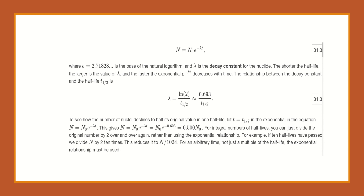In this class, in physics classes in general, what we tend to worry about is the math. We're going to do a quick run-through of how to do the math regarding radiocarbon dating. The following equation gives a quantitative relationship between the original number of nuclei present at time 0, N₀, and the number N at a later time. The equation is N equals N₀ times e to the negative lambda t, where e is its mathematical equivalent of 2.71828, and lambda is a decay constant for the nuclei. The shorter the half-life, the larger the value of lambda, and the faster the exponential e to the negative lambda t decreases with time. This relationship between the decay constant lambda and the half-life gives the equation: lambda equals 0.693 over half-life.